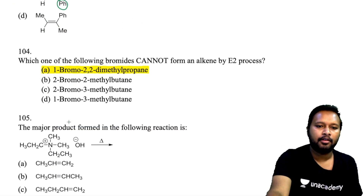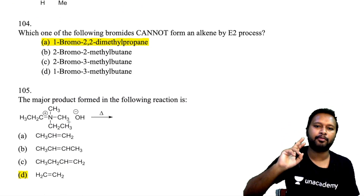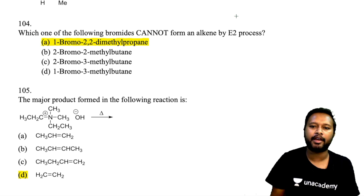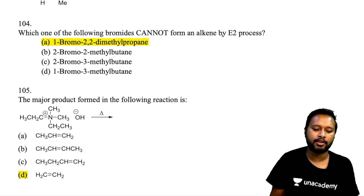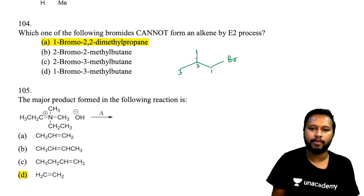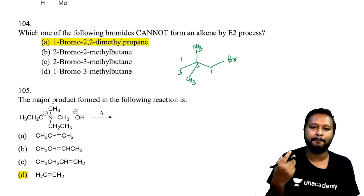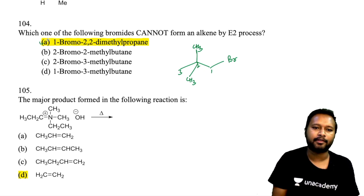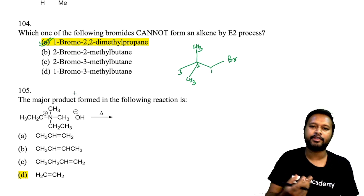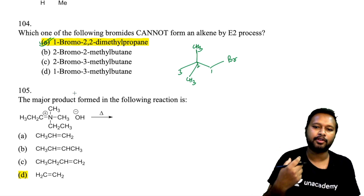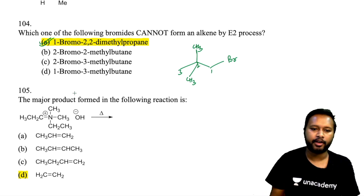Question 104 asks which bromide cannot form an alkene by E2. The E2 mechanism requires a β-hydrogen. Option A (1-bromo-2,2-dimethyl compound) has no β-hydrogen at the 2-position due to two methyl groups — so E2 elimination cannot occur. All other options have available β-hydrogens and can undergo E2 to give HBr elimination products.